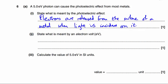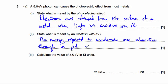Part two, state what is meant by an electron volt, an eV. So it is the energy required to accelerate one electron through a potential difference of one volt.